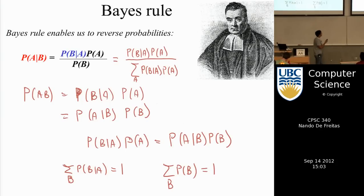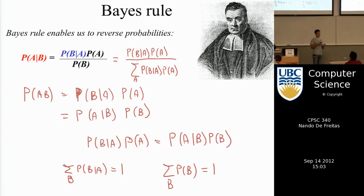In particular, Bayes rule, which is a direct consequence of the rule of conditioning, will allow us to go from the probability of B given A to the probability of A given B. So if we know how to generate sounds given words, we'll be able to get words given sounds.